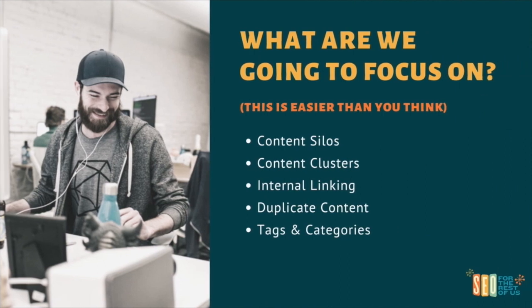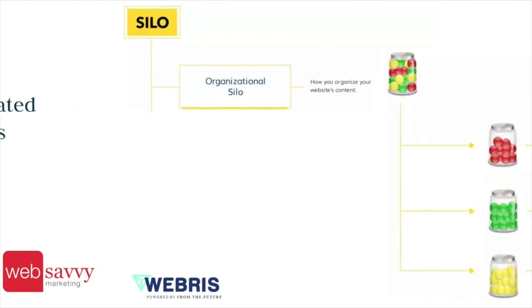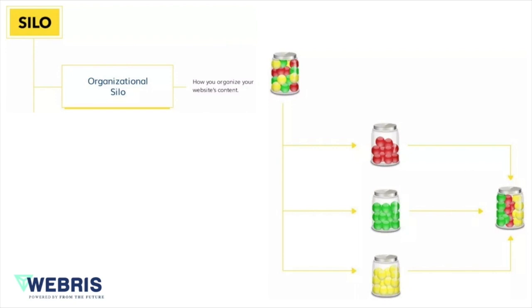What are we going to focus on with site architecture? This is a lot easier than you think. We're going to talk about content silos, content clusters, internal linking — that's probably my favorite one — maybe duplicate content, and also tags and categories. According to Web Savvy Marketing, a content silo is a method of grouping related content together to establish the website's keyword-based topical areas or themes. This is called a content silo because it reflects a physical silo — an organizational structure for how we organize our website's content. So instead of having a jumbled mess of different content, we organize and silo them together so it all starts to make sense.